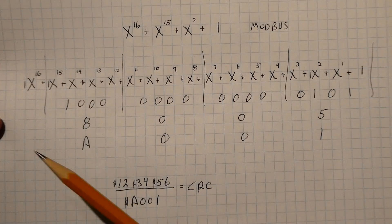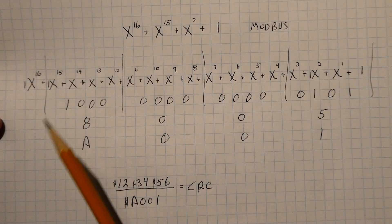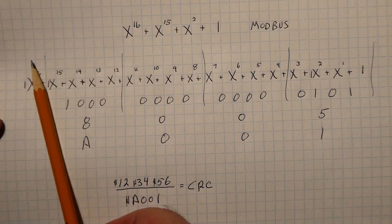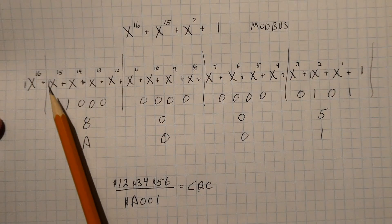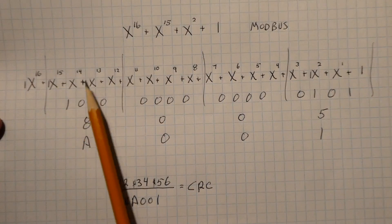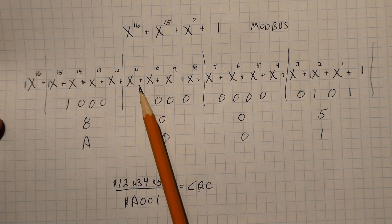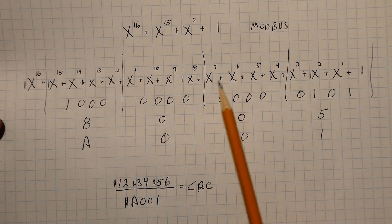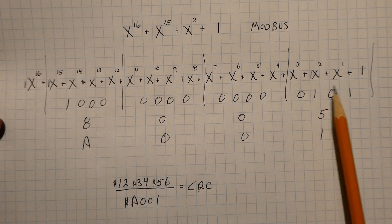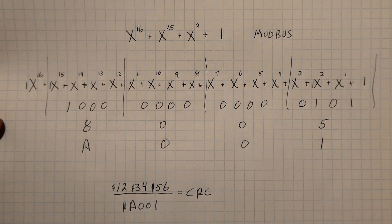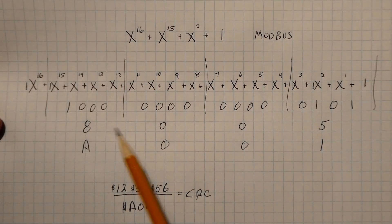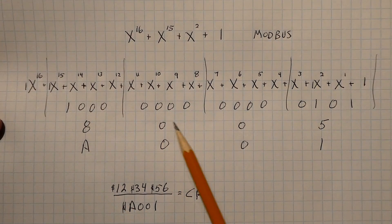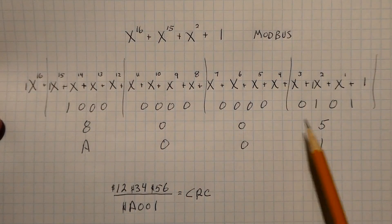If we bring down the coefficients and truncate the leading x¹⁶ term, we get the binary value: 1 0 0 0 0 0 0 0 0 0 0 0 0 1 0 1, which is hex 0x8005. That's our polynomial value.